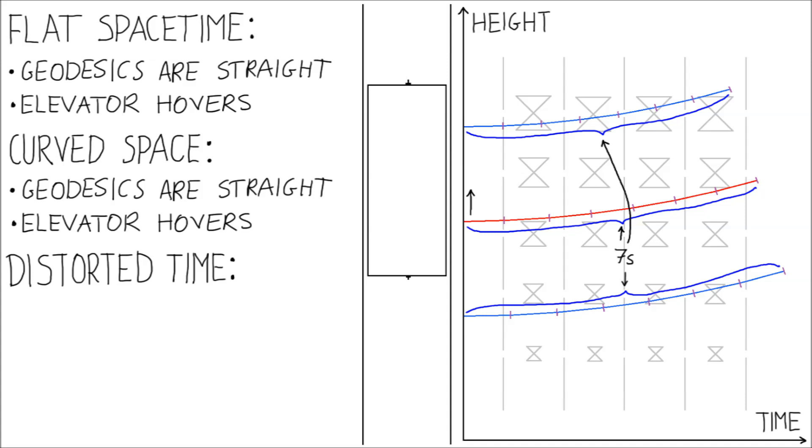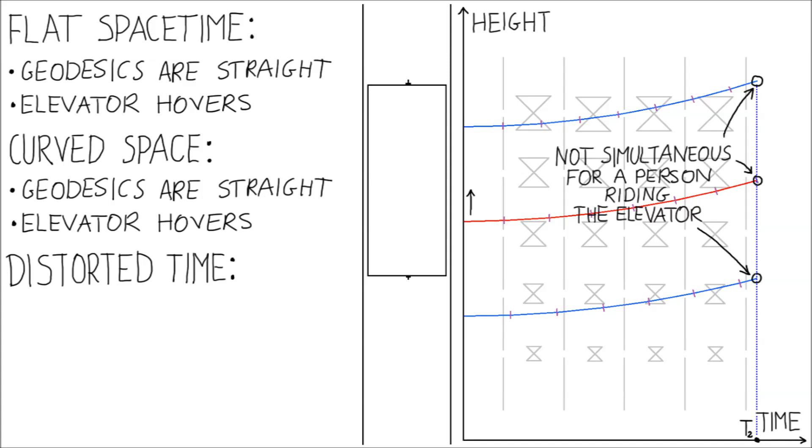The problem is that we measure the position of the top of the elevator first, then middle, then bottom. So, we measure positions at different times. We may try to fix it by measuring all positions at the same time but this is still incorrect. According to special relativity, events that are simultaneous for one observer are not simultaneous for other observers. So, let's review special relativity.